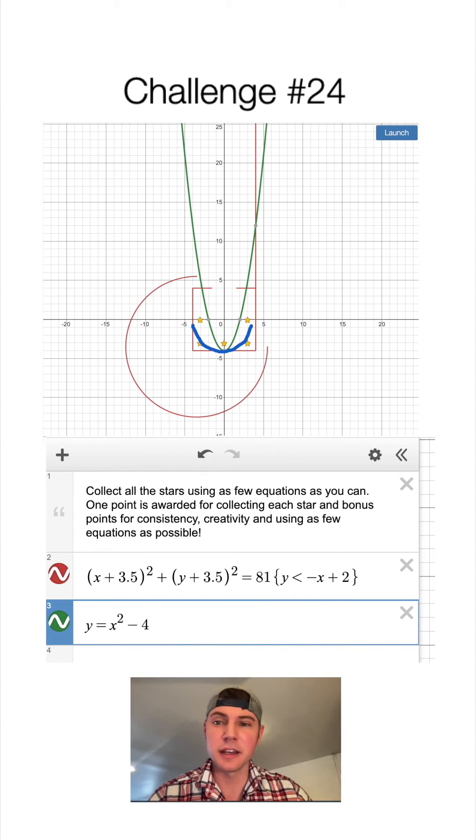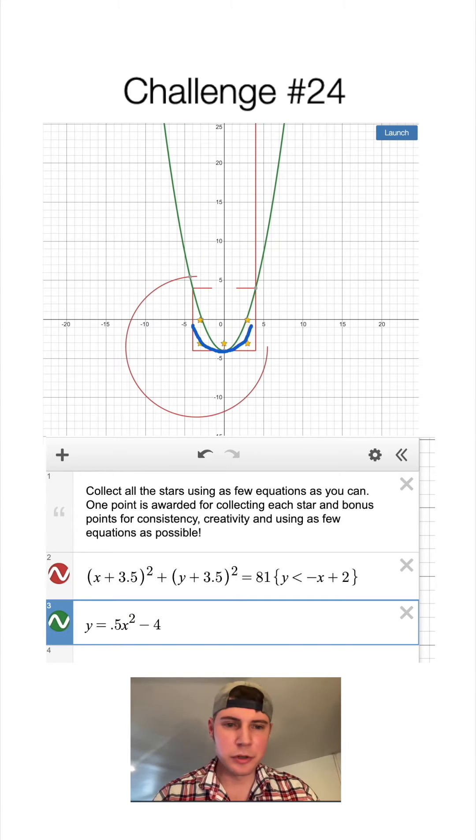So if we put a multiplier in front of this x, if we make this less than one, that'll make it shorter, which essentially is making it wider. And I'll try something like 0.5, not enough. 0.25,